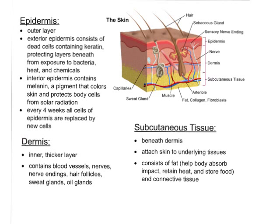The dermis is the inner, thicker layer. The dermis contains blood vessels, nerves, nerve endings, hair follicles, sweat glands, and oil glands — all contained in this dermis layer. The subcutaneous tissue is beneath the dermis. It attaches the skin to the underlying tissues of the body, and it contains fat, which helps the body absorb impact, retain heat, and store food. It also contains some connective tissues.